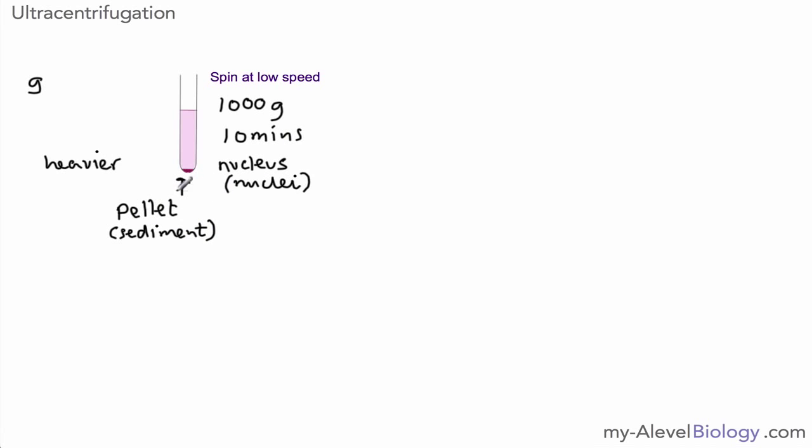Once we have that we can then remove the liquid and we call that liquid the supernatant. So the liquid is a supernatant and we have the sediment or the pellet at the bottom. And we could take that supernatant and put it into another test tube and spin it at slightly higher speeds and creating G forces of around about three to maybe four thousand G's again for around about ten minutes and we get the next level of organelles separated out and this is usually the mitochondria.